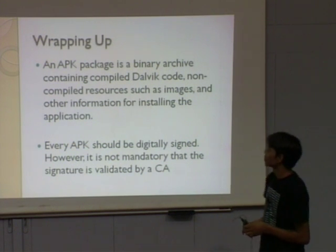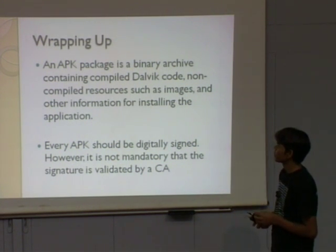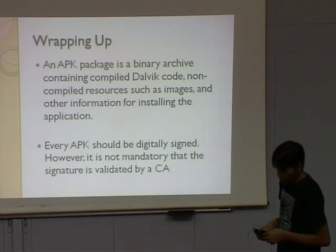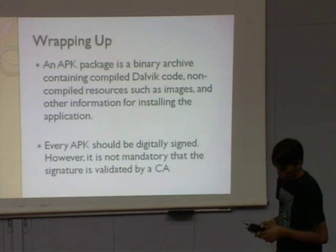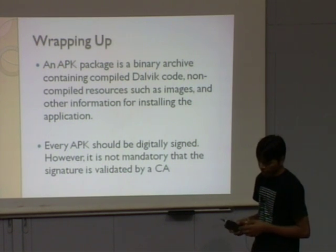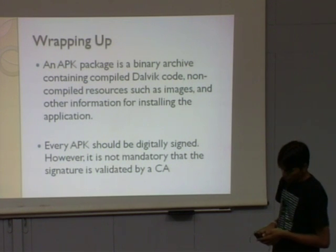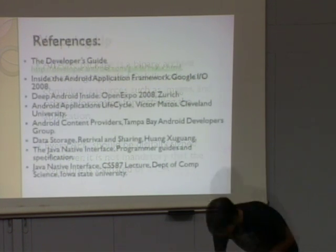An APK is a binary archive containing compiled bytecode and non-compiled resources such as images and other information for installing the application — like libraries or other information. Every APK should be digitally signed, though it is not mandatory that the signature is validated by a CA. These are the references.